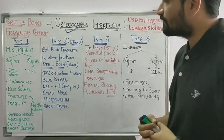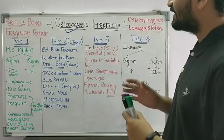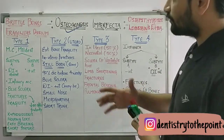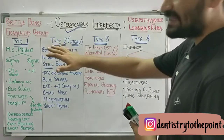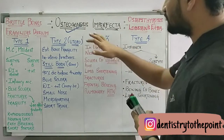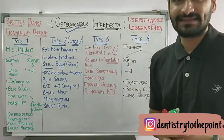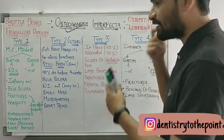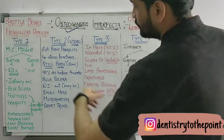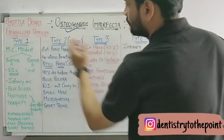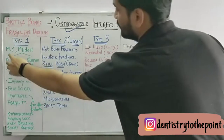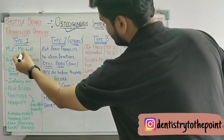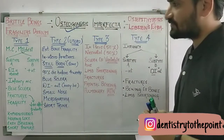In Part 1, we discussed the common clinical features of osteogenesis imperfecta. Now we're moving on to the discussion of each and every type, as classified by Sillence et al. in 1975. We'll start with Type 1 osteogenesis imperfecta, which is considered the most common and the mildest form of all the types.